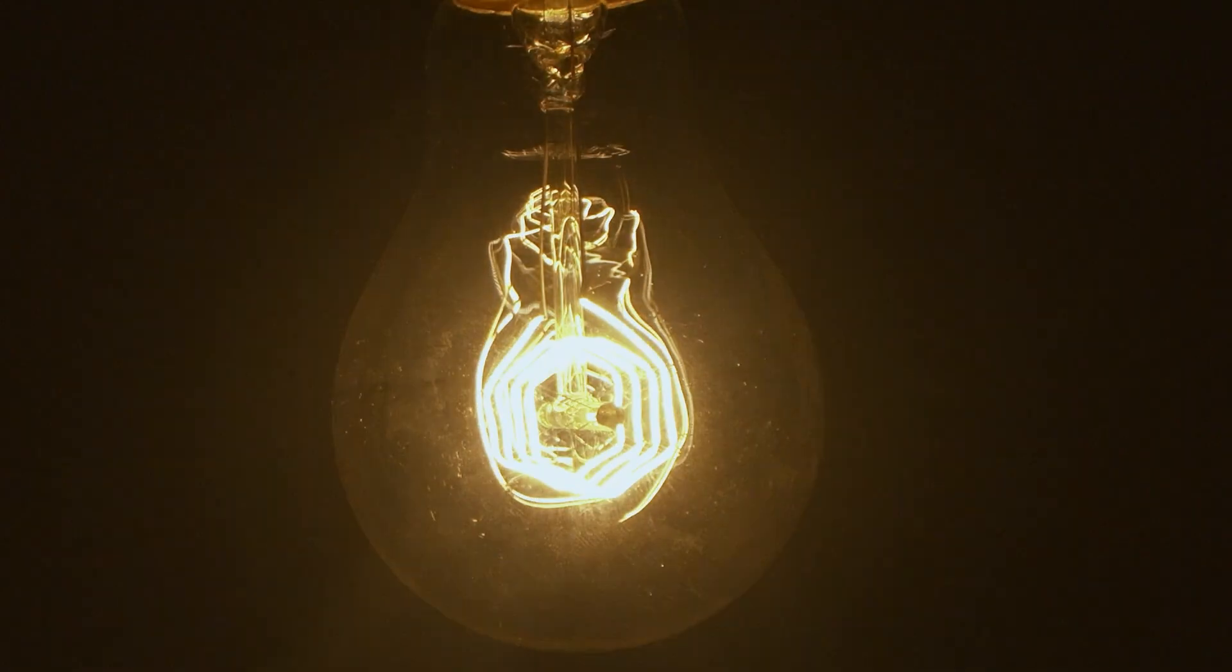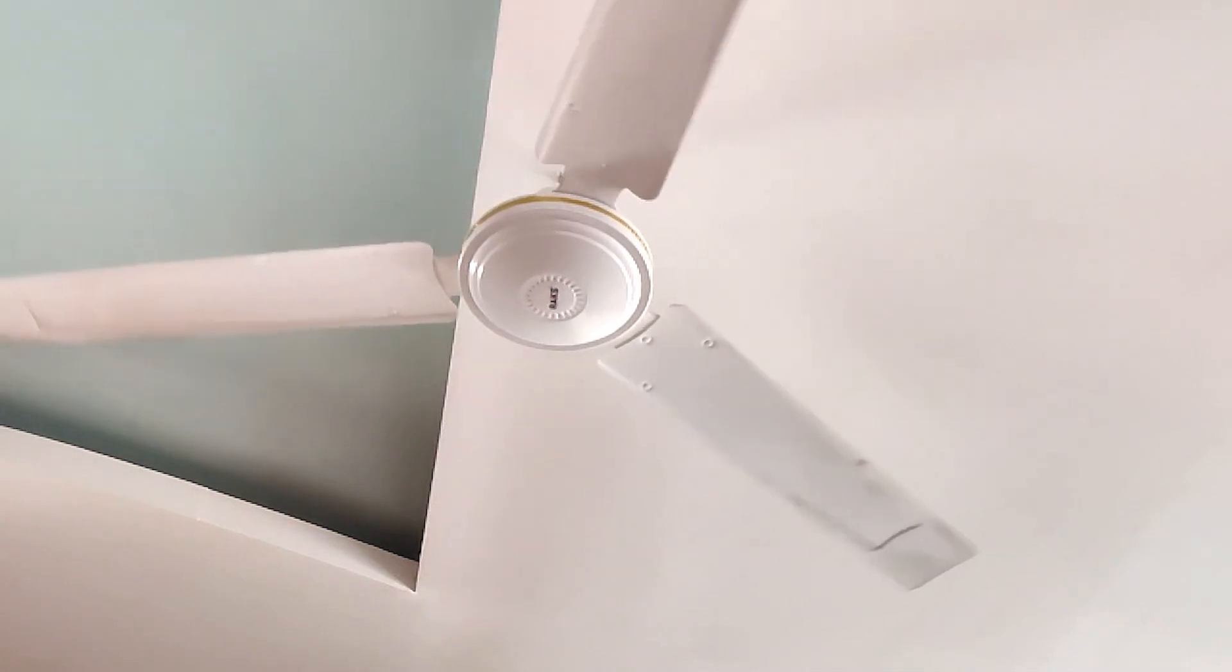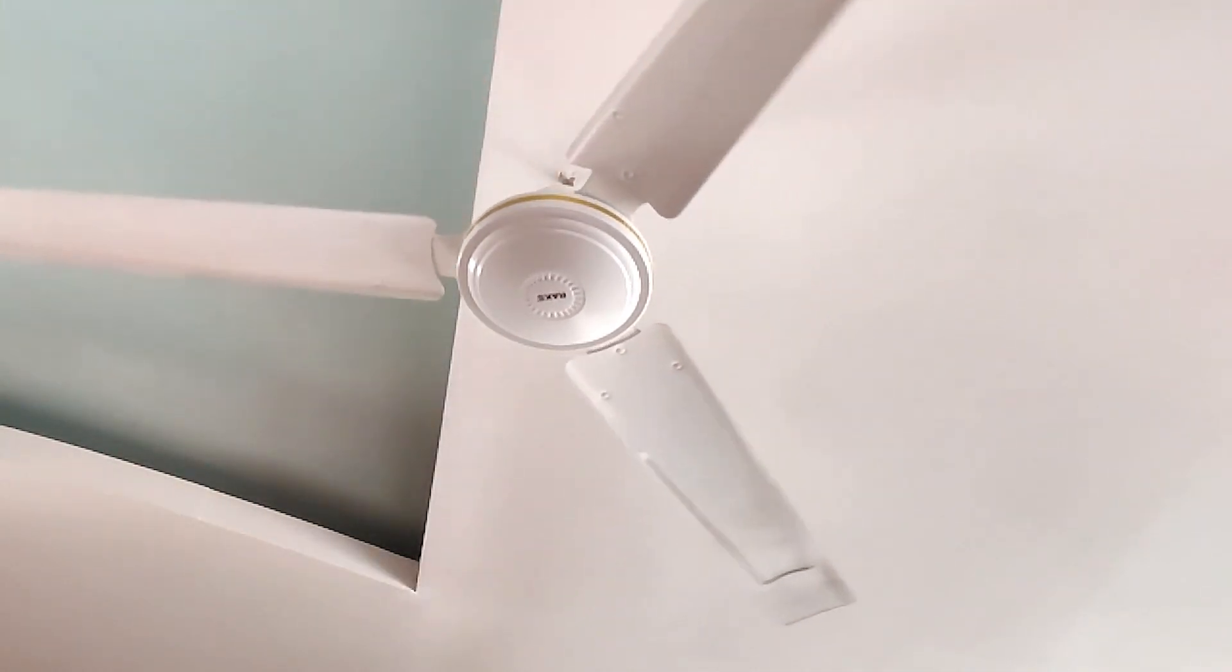Let's start with the basic principles behind the working of dimmer circuits. How do you think a little knob on your lamp or ceiling fans is able to provide controlled power to the AC loads?